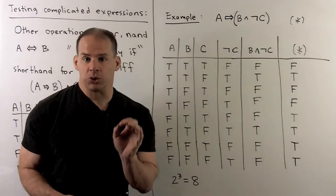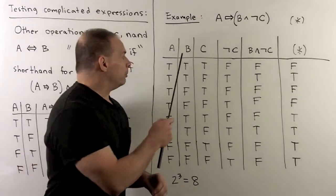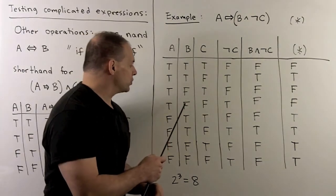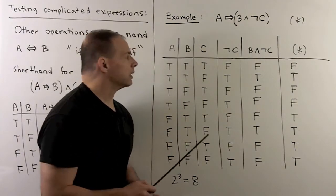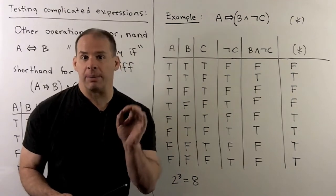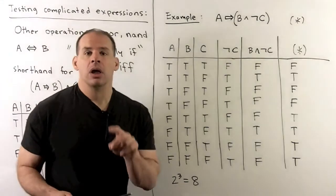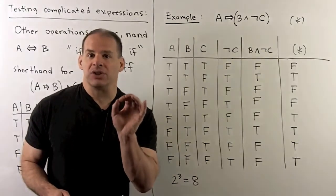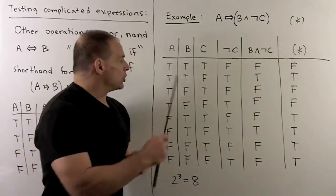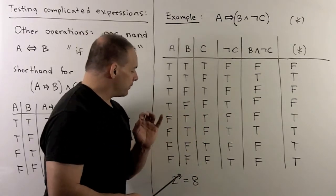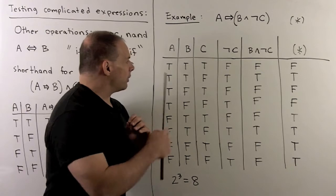For C, we'll alternate between true and false. For B, I'm going to alternate by twos. So, I have two trues, two falses, two trues, two falses. Then, for A, I alternate by fours. So, I have four trues, four falses. The way you know that you've set things up right, the number of rows that you should have should be two to the number of statements. So, here I have two to the three equal to eight, and we have eight rows.